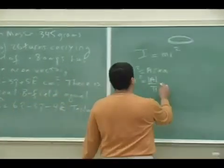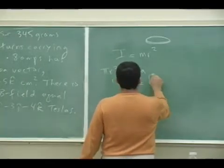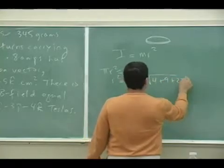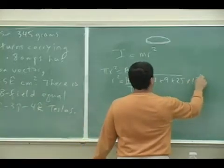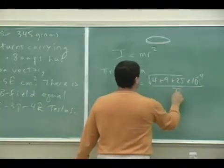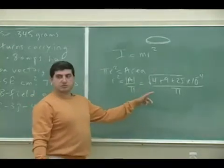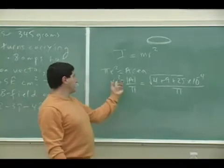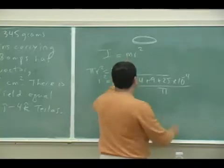So we just take the magnitude of the area vector divided by pi that gives you the r squared. So this one becomes the magnitude is equal to square root of 4 plus 9 plus 25, and then since it's centimeter squared, change it to meter squared 10 to the minus 4 divided by pi. That's equal to r squared.